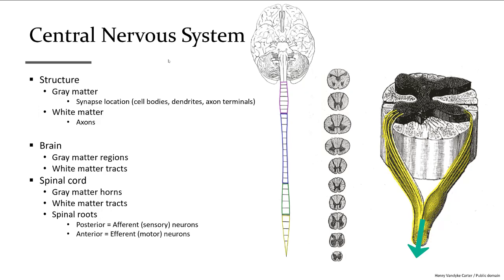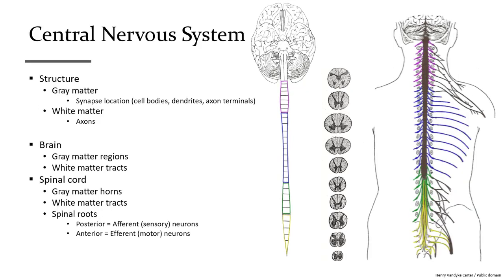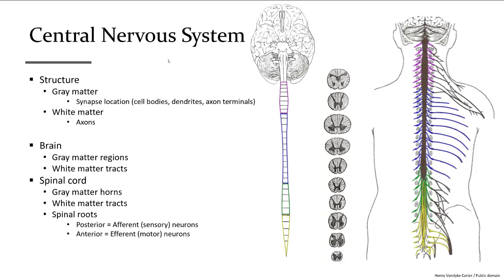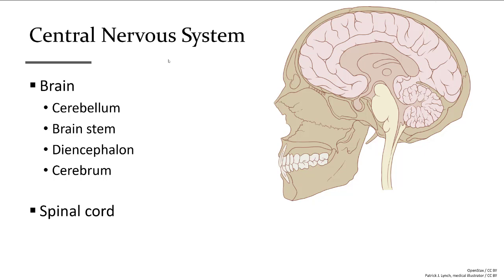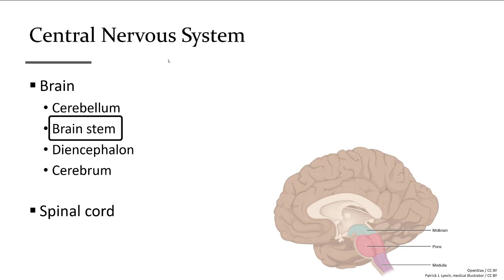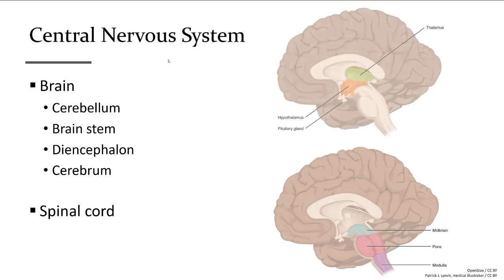The spinal nerves exiting through the intervertebral foramen are the beginning of the peripheral nervous system. Focusing on the brain, the most recognizable regions are the cerebrum — the uppermost prominent, convoluted part — and the cerebellum, a smaller rounded structure on the posterior aspect. Looking at the interior, we see the brainstem adjacent to the spinal cord with three main segments, and the diencephalon forming the central portion with two distinct regions.